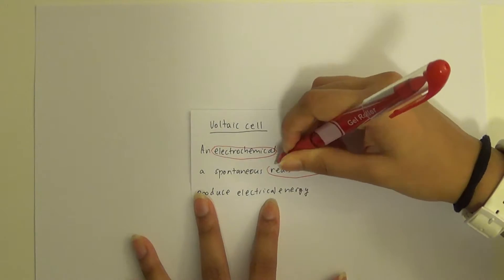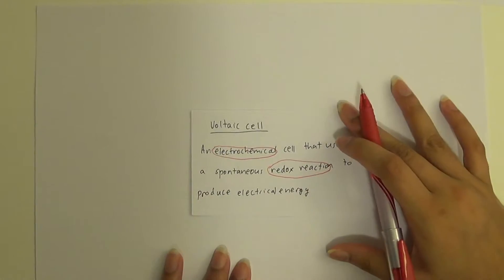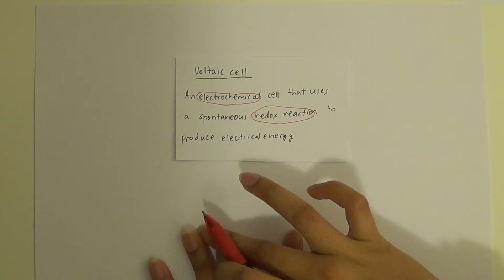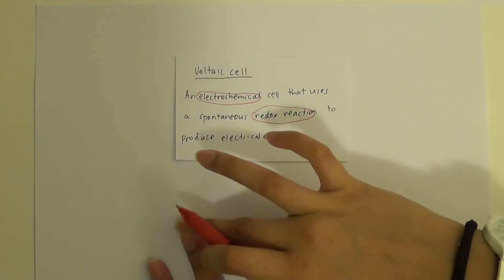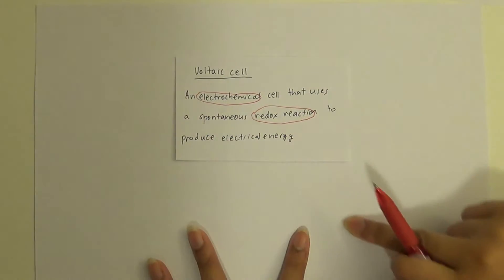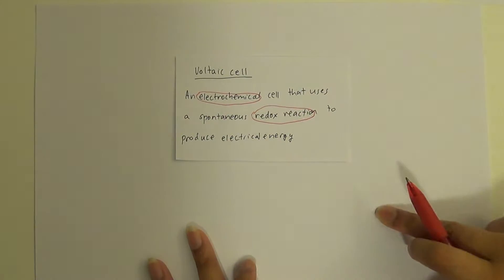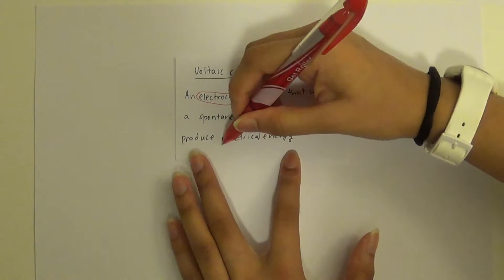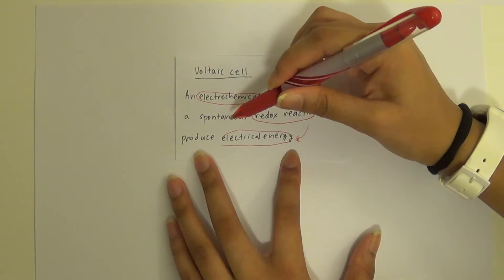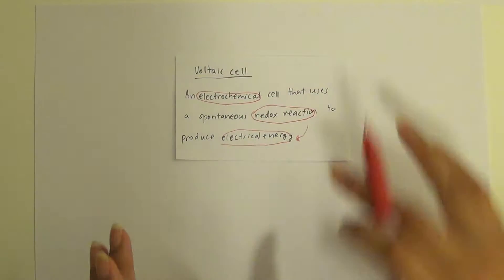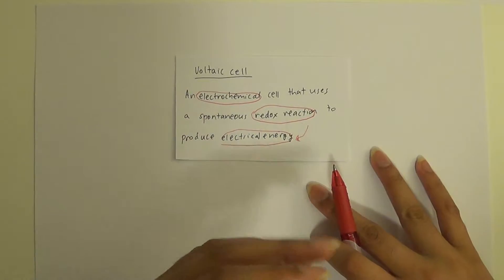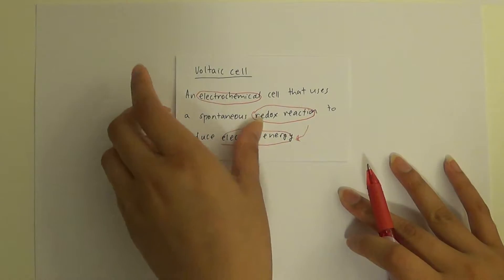When we talk about spontaneous redox reactions, we're talking about electron transfer. Electrons are being transferred from one cell to another cell, and this movement of electrons generates electrical energy, because electron flow is electrical energy. The reactions happening in each cell are spontaneous — they occur on their own without needing a battery or anything.